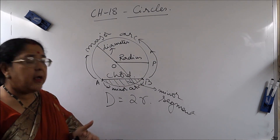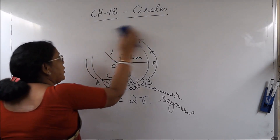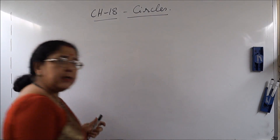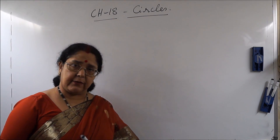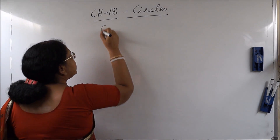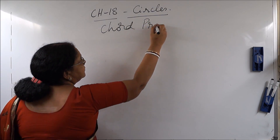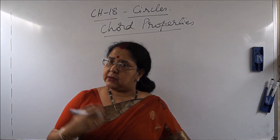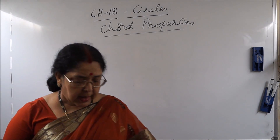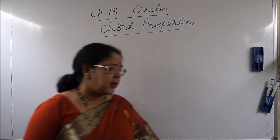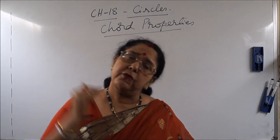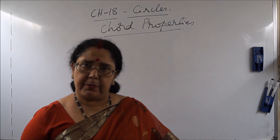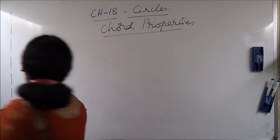Now let us learn a few more properties related to chords. There are many properties that we will be learning. Let us start with the chord properties. Under chord properties we will be learning three theorems. For our convenience we may number them theorem 1, theorem 2, theorem 3, but these theorems have no fixed numbering — you cannot refer to them as theorem 1 or theorem 2; you have to refer to them by their full statement.